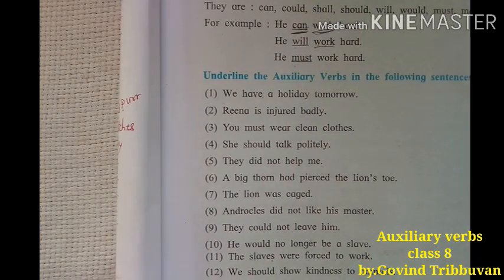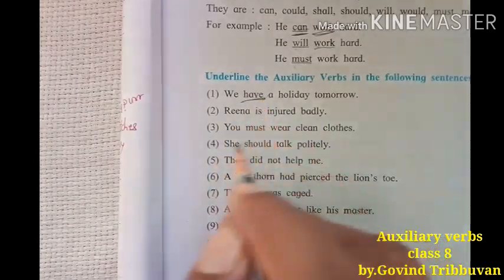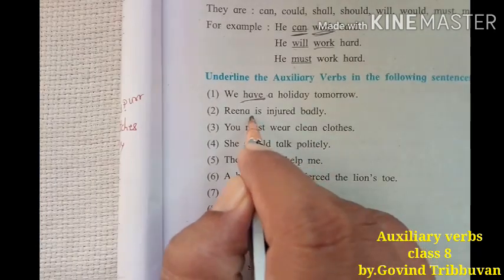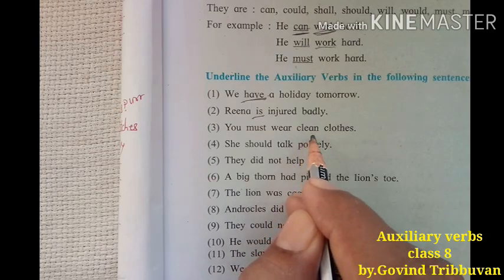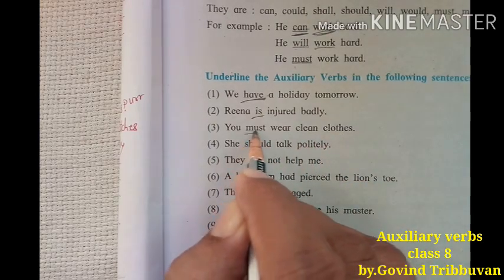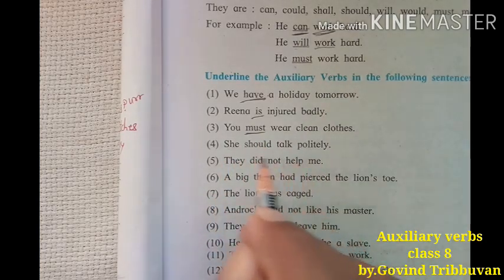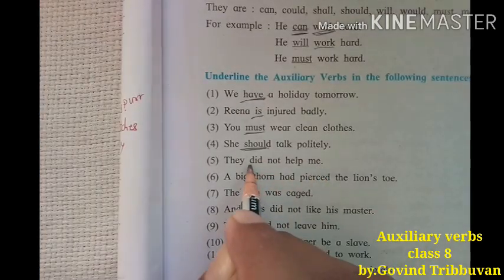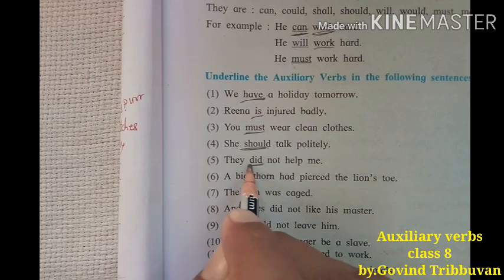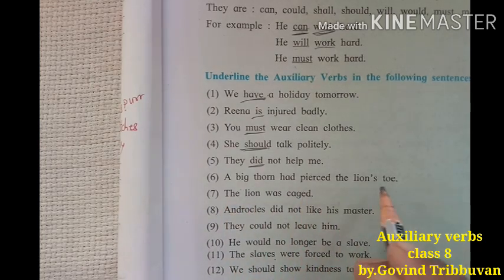We have a holiday tomorrow — 'have' is primary auxiliary work. Rena is injured badly — 'is' is primary auxiliary work. You must wear clean clothes — 'must' is modal auxiliary work. She should talk politely — 'should' is modal auxiliary work. They did not help me — 'did' is primary auxiliary work.